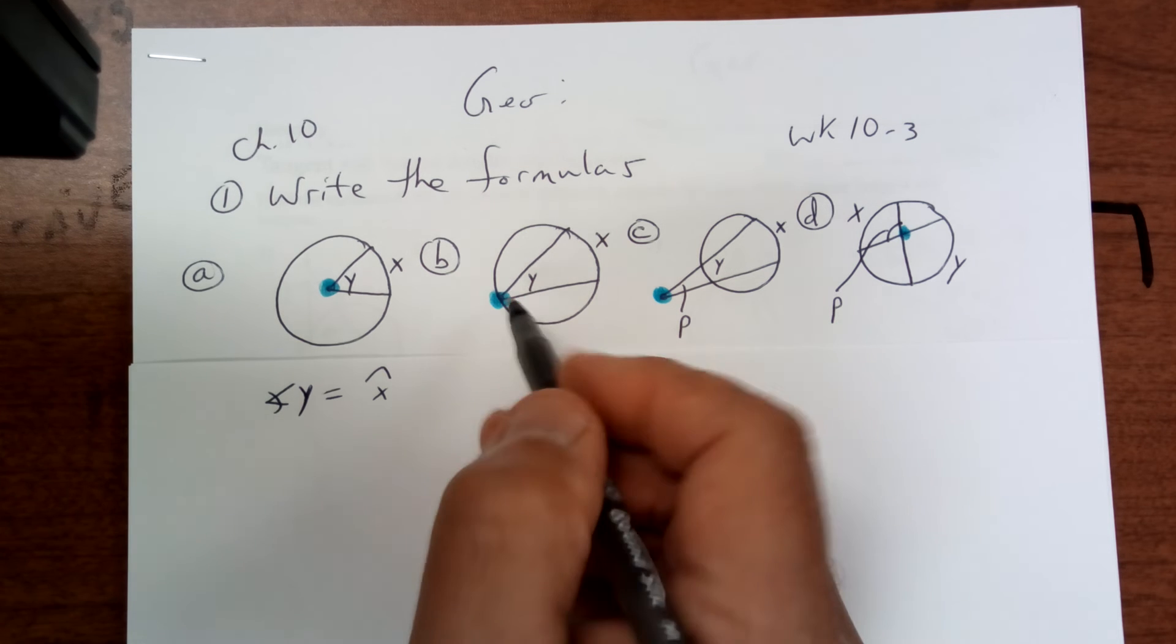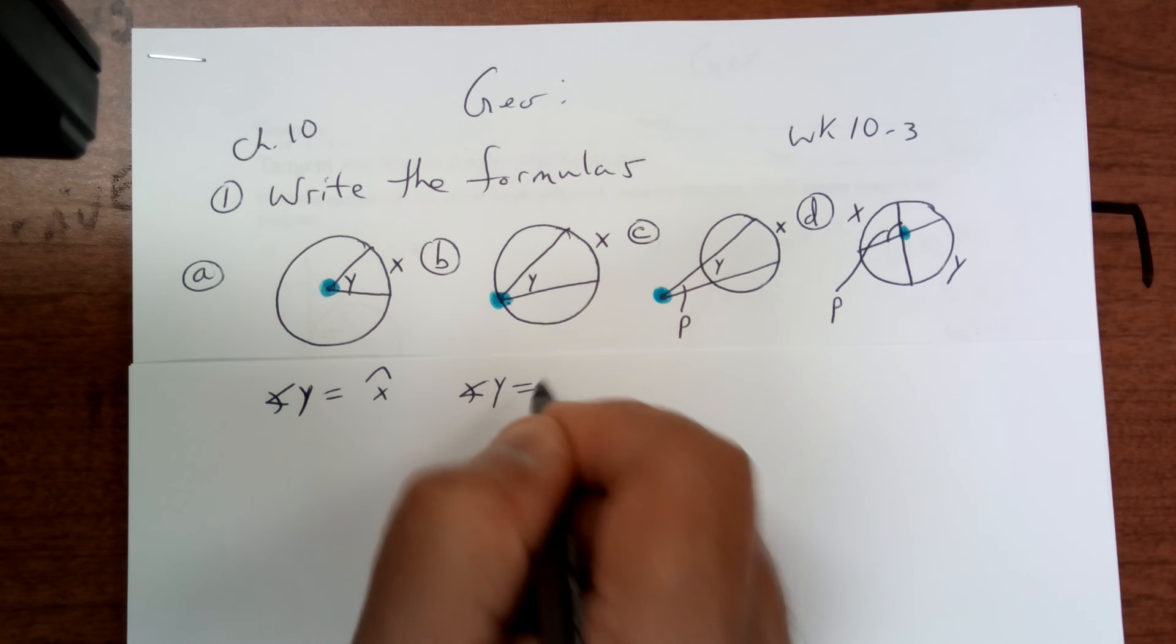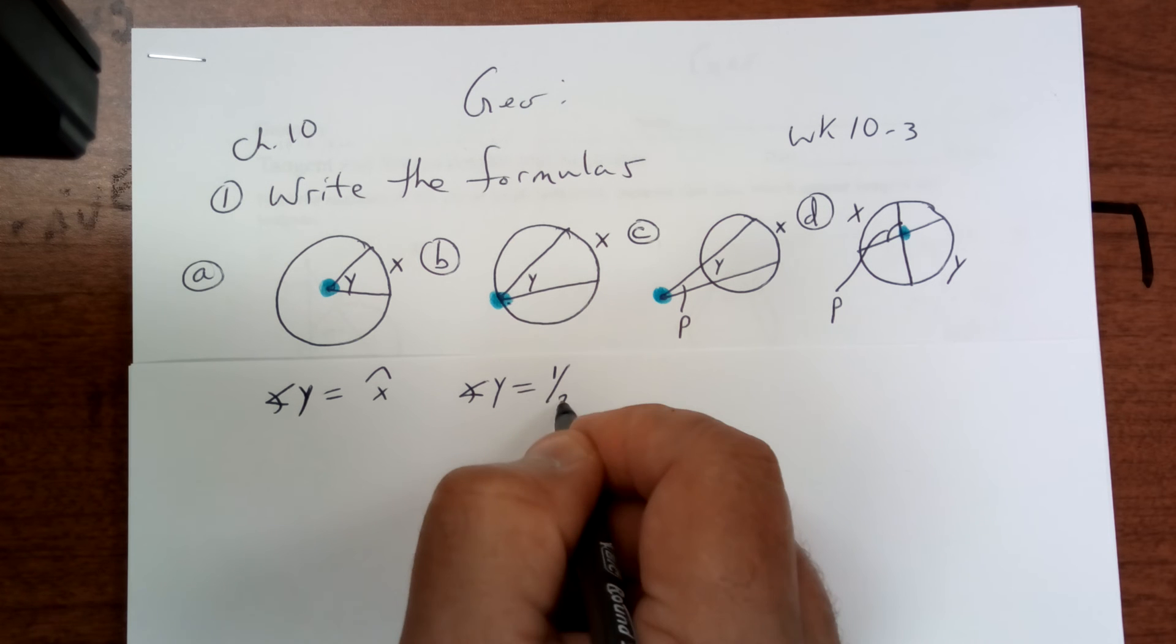This one is on the circle, so angle Y is equal to half of whatever arc X is.